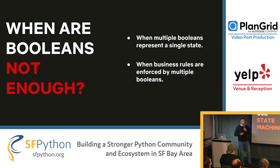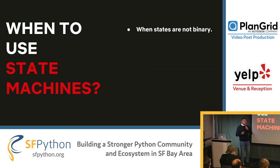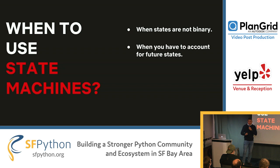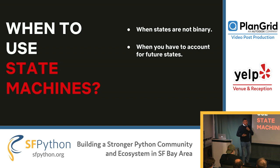So when do we use state machines? When states are not binary — when you have something more than true or false, yes or no — you may want to consider a state machine. When you have to account for future states — and this is not about over-engineering, but knowing for a fact that the state is going to keep growing and evolving, that you'll need to add new states and enforce new business rules — you definitely want to consider using a state machine, because the code will evolve rapidly and become a mess.